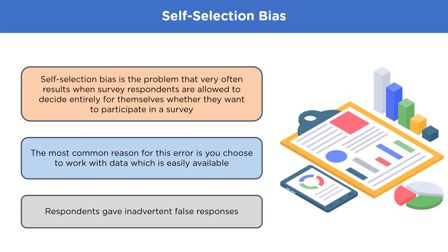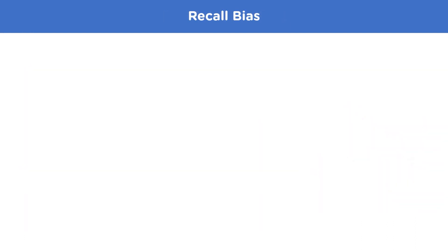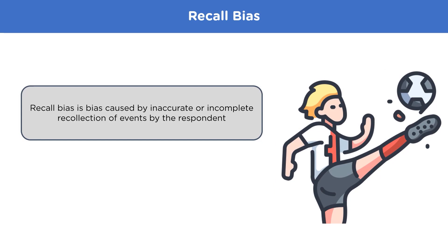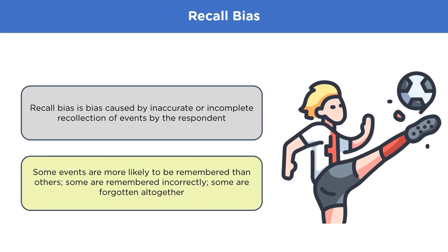Recall bias occurs when respondents' recollection of events is inaccurate or incomplete. It is especially problematic with retrospective survey questions. For example, if you're asked about a football match that happened three years ago, you may remember the goals and good moments but not the mistakes or fouls. If you try to guess, a recall bias can occur.